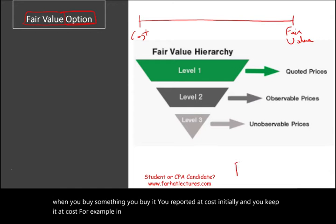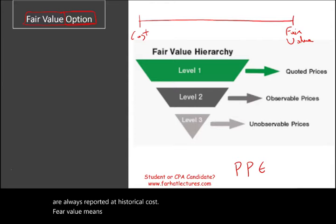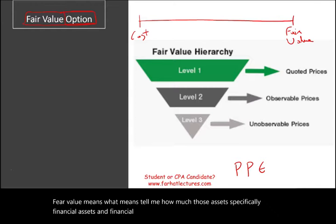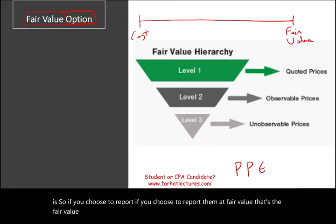in the U.S., under U.S. GAAP, property, plant, and equipment are always reported at historical cost. Fair value means what? It means tell me how much those assets — specifically financial assets and financial liabilities — are worth today. So if you choose to report them at fair value, well, that's the fair value option. This is what we are discussing here.